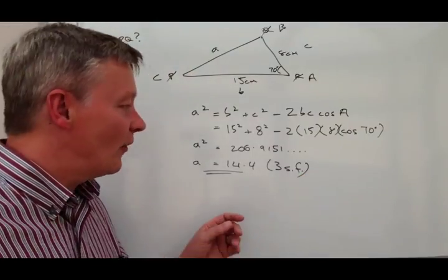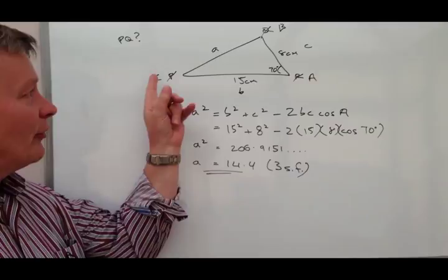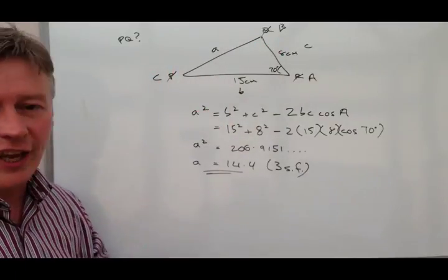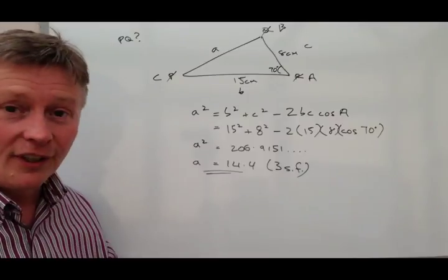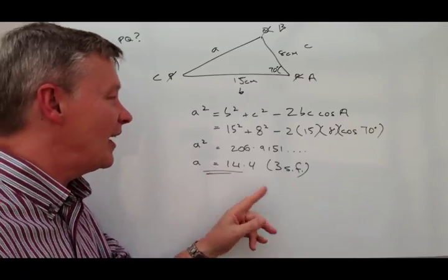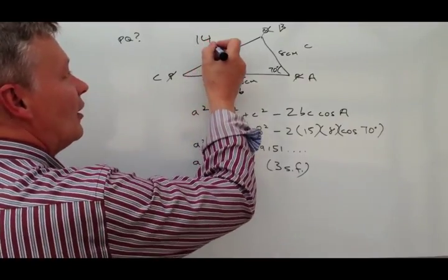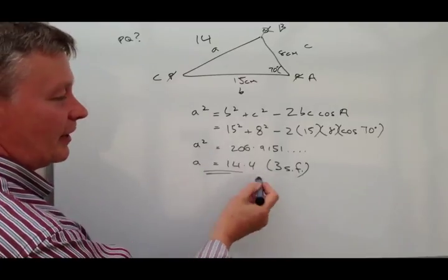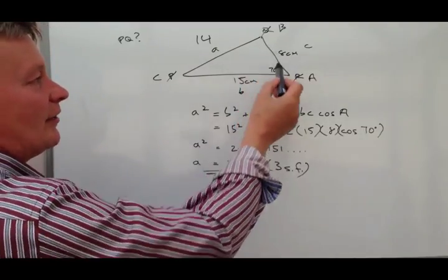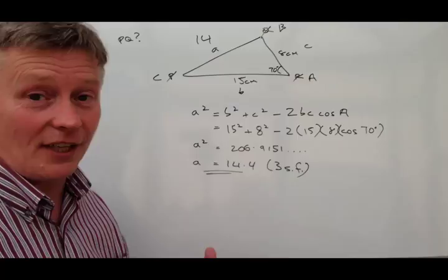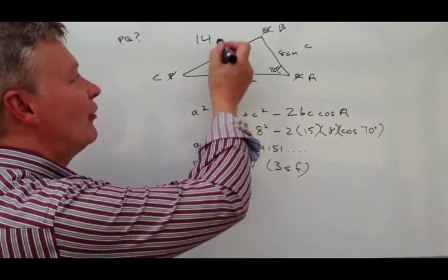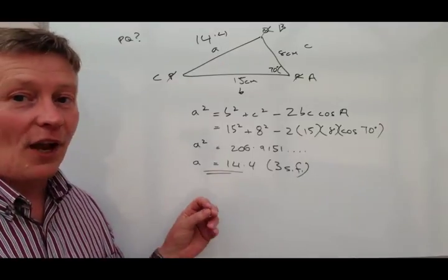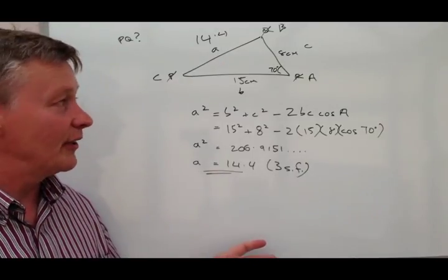OK. So it's also a very good idea, apart from relabeling, to also check it just a little bit to ask yourself, is that a reasonable value of A? Well, it is. It's fairly reasonable. OK. That's likely to be 14 and a bit centimeters. If that's 8 and that's 15, it seems reasonable that it's going to be about 14, 14.4 in this particular case. I hope that's been OK for you.